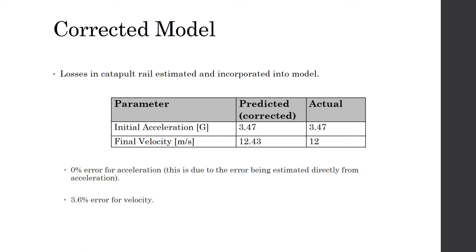A 0% error for accelerations was observed. This is due to the error being estimated directly from the acceleration. A 3.6% error for velocity was obtained. This is a small error but it shows that the losses in the catapult are nonlinear.